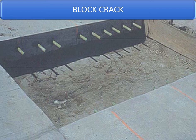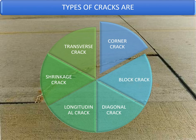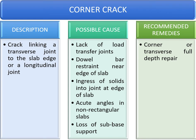The second type of crack under discussion is corner cracks, in which a corner of the panel gets cracked or sometimes settles, separating into two parts from the main slab. Corner cracks are described as cracks linking a transverse joint to the slab edge or a longitudinal joint. Possible causes include lack of load transfer at the joints, dowel bar restraint near the edge of the slab, ingress of solids into joints restricting slab movement, acute angles in non-rectangular slabs, or loss of sub-base support.